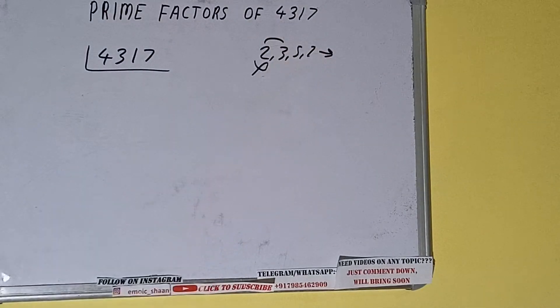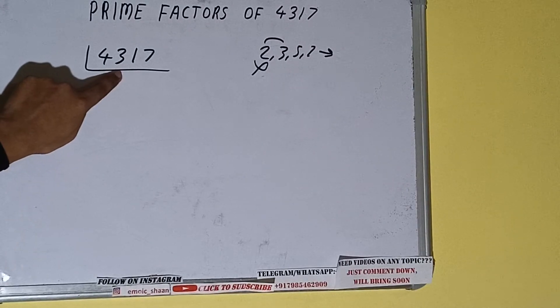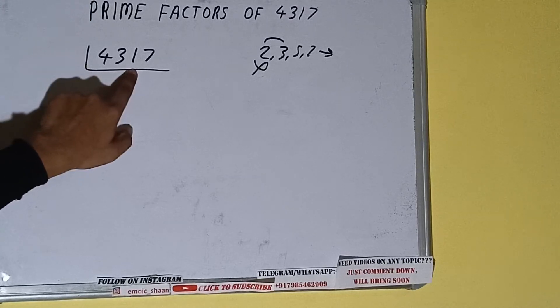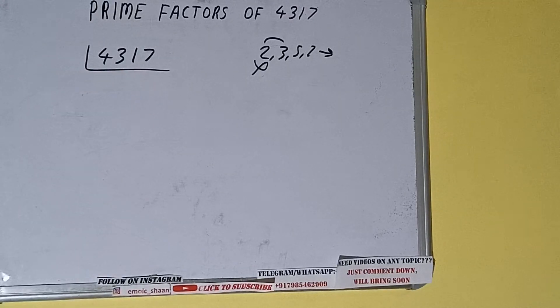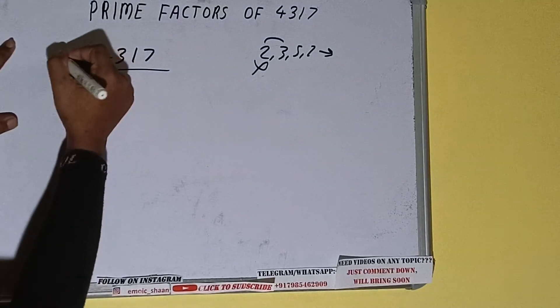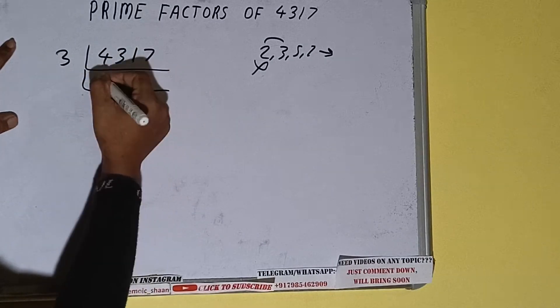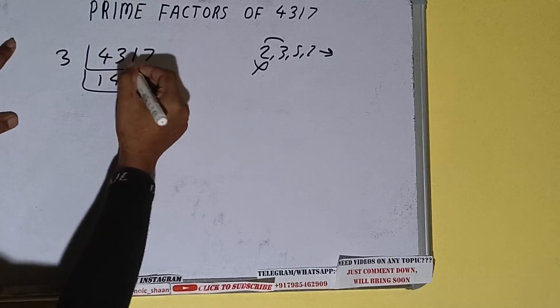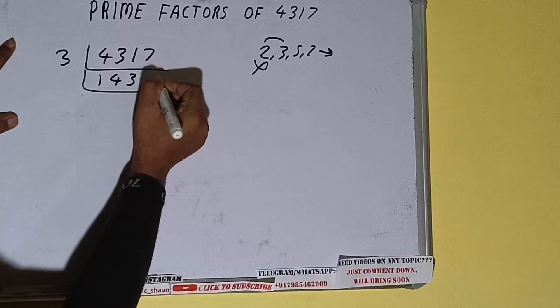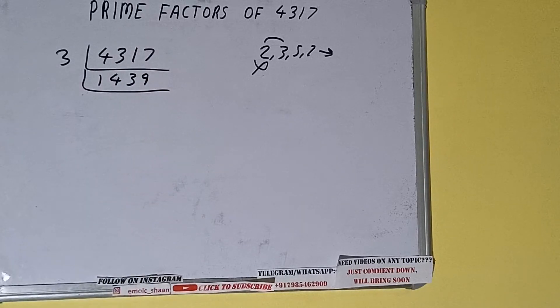3 into 4317: 3 times 1 is 3, 3 times 4 is 12, 1, 1, 3 times 3 is 9, 2, 7. Yes, it is divisible by 3, so divide it. We'll be having 1439.